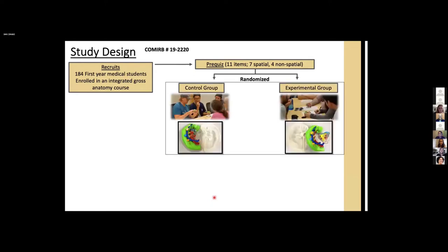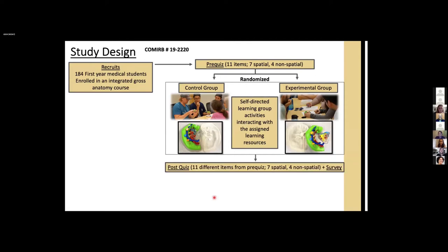And all the participants took the pre-quiz which had the spatial and non-spatial items. Then they were randomized into two groups, control groups and experimental groups. So control group interacted with the single piece model, model en bloc. And experimental group interacted with the modular model, model in pieces. So each group engaged in self-directed learning group activities. They were provided with the worksheet which have the same concept, same learning objectives and same instructions. After the activity, they took the post-quiz and optional survey.